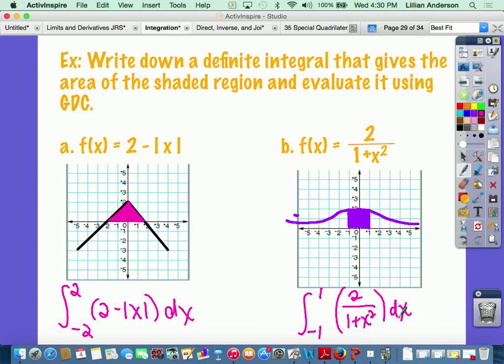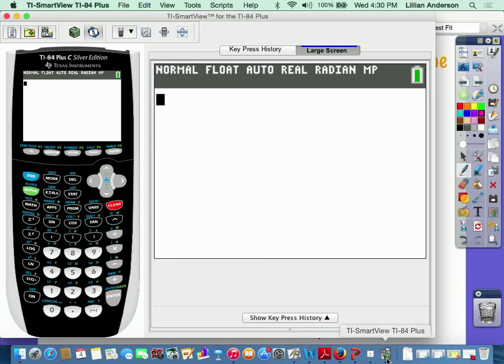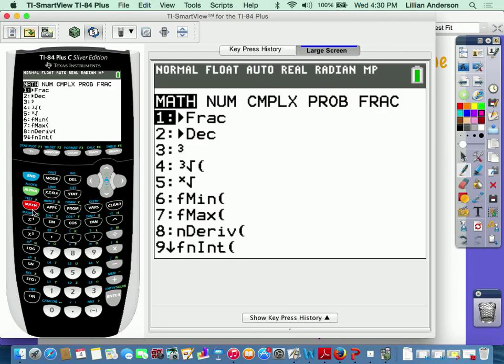Now, how we actually evaluate our calculator is pretty cool. So you need your calculator, so go ahead and pull that up. Then you're going to press your math button, and you're going to go down to option 9, which is fnInt, which basically, I don't know what it stands for, but it means integral.